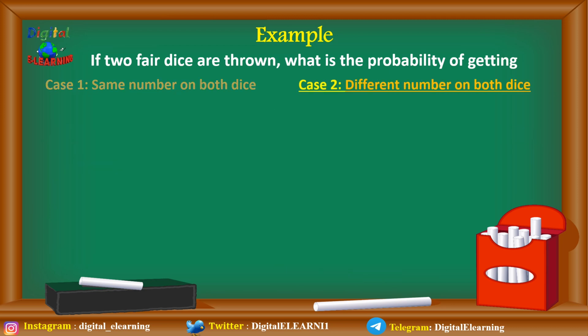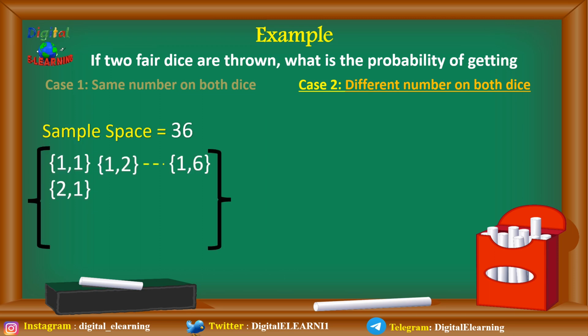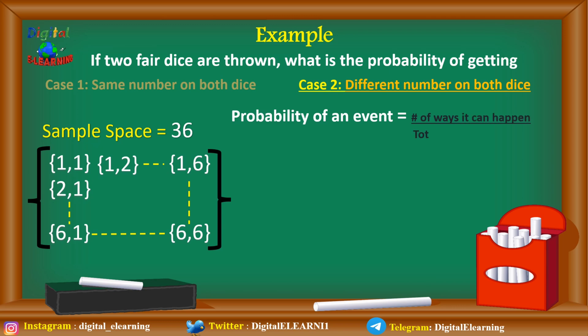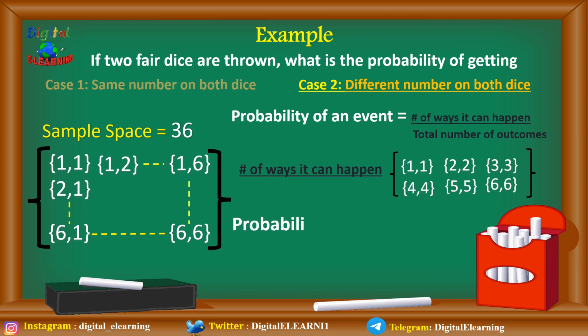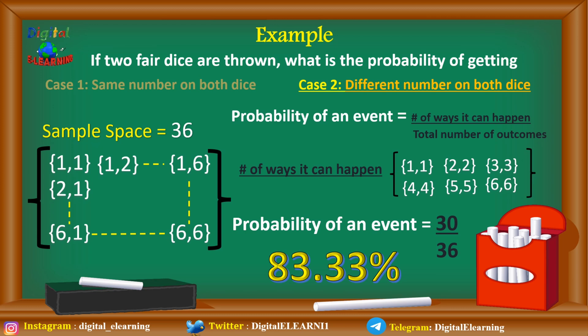For the second case — different numbers on both dice — the sample space is again 36. We know the same number occurs in only 6 cases, so we subtract from the total: 36 minus 6 equals 30. The probability is 30 divided by 36, which comes to 83.33 percent. Notably, 16.67 plus 83.33 sums to 100 percent.